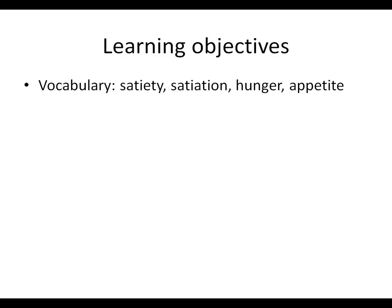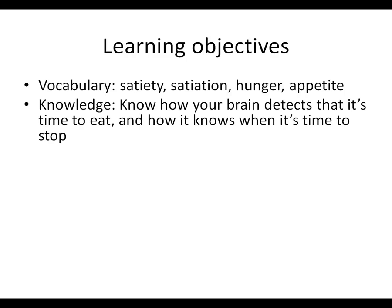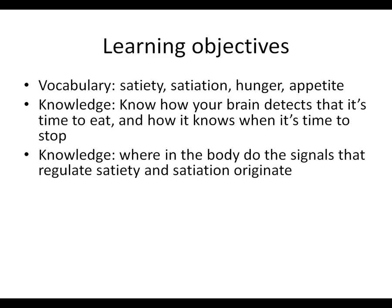First of all, we're going to talk about the difference between satiety, satiation, hunger, and appetite. All of these seem related, but they have very precise meanings, and it turns out that they're regulated differently. I want you to know how your brain takes the information about what's going on in your digestive system and turns it into information that controls your behavior. I want you to know where those signals come from in the body, because it plays a role in how they're regulated.